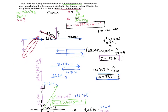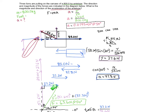To recap: the trick to solving a problem like this is to split all of your vectors into x and y components. If you have a vector at an angle, break it up into its components. Then add up all the y's, add up all the x's, form a new right triangle, find the hypotenuse using the Pythagorean theorem, and then plug that net force back into the acceleration equation.